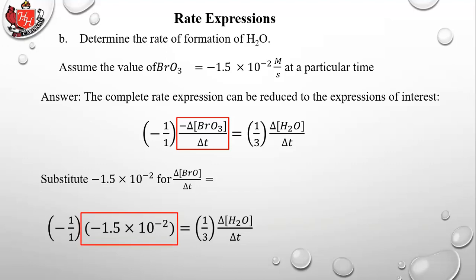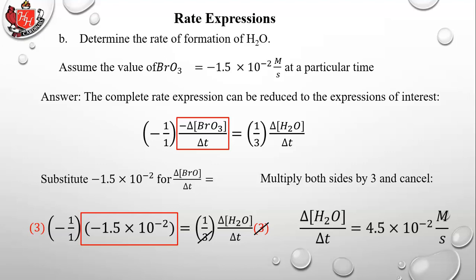Now do a simple algebra step: the negative-negative on the left becomes positive. Multiply both sides by 3 and cancel to isolate delta [H₂O] over delta T by itself. Then do the math: 3 times 1.5 × 10⁻² gives 4.5 × 10⁻² molar per second. That is the rate at which H₂O is being formed when BrO₃ is being reduced at 1.5 × 10⁻² molar per second.